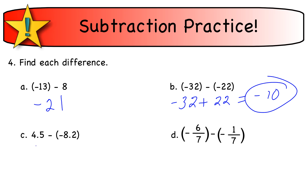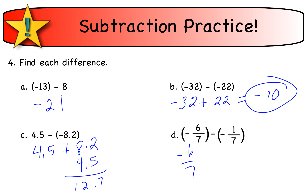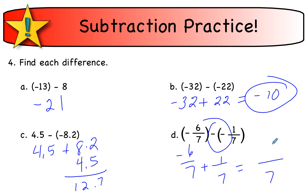Next: 4.5 minus negative 8.2 becomes 4.5 plus 8.2. Adding those gives 12.7. For negative 6 sevenths minus negative 1 seventh: a double negative makes it positive, so this becomes negative 6 sevenths plus 1 seventh. Opposite signs, subtract: 6 minus 1 is 5, keep the sign of the bigger one (6), giving negative 5 sevenths.